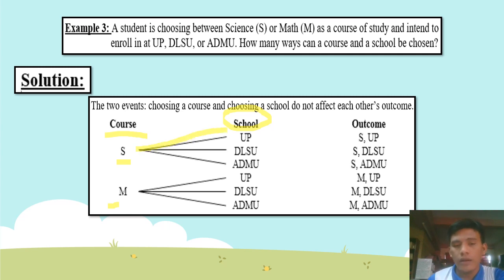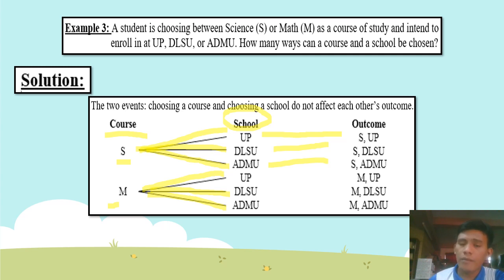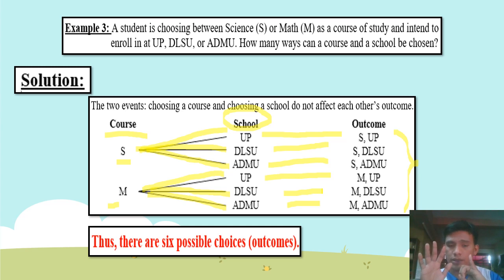For science, the student can go to UP, DLSU, or Ateneo. For math, the student can also enroll in UP, DLSU, or Ateneo. The outcomes are: science-UP, science-DLSU, science-Ateneo de Manila University, math-UP, math-DLSU, and math-Ateneo de Manila University. As you can see, there are six possible outcomes, or six possible choices, and that will be our answer.